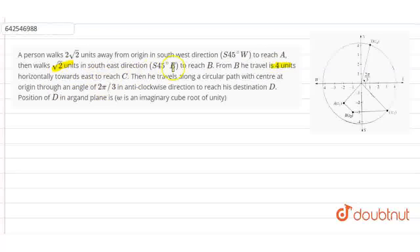Then he travels along a circular path with center at origin through an angle of 2 pi by 3 in anticlockwise direction to reach his destination D.